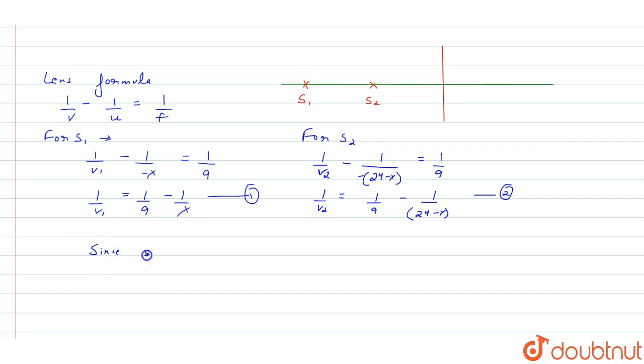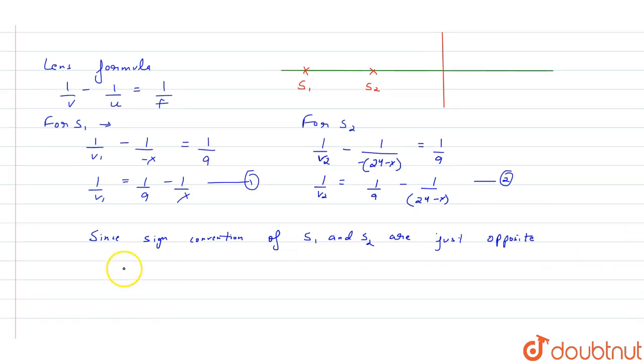Since sign convention of S1 and S2 are just opposite, we can say 1 by v1 is equal to 1 by minus v2. This is equal to 1 by 9 minus 1 by x, which equals 1 by 24 minus x minus 1 by 9.